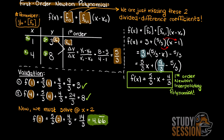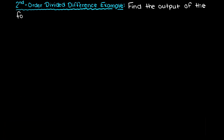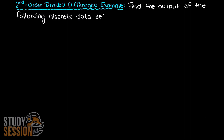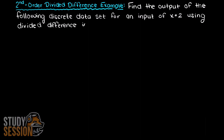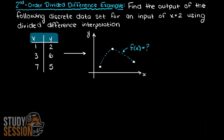I hope that this video helped your understanding of how to solve a first order divided difference problem. In this second order divided difference interpolation example video, we are going to be walking through how to solve a second order Newton divided difference example. This question is asking us to find the output of the following discrete dataset for an input of x equals 4. If you missed our previous video on the theory and intuition behind the divided difference method, I recommend that you check out that video first.